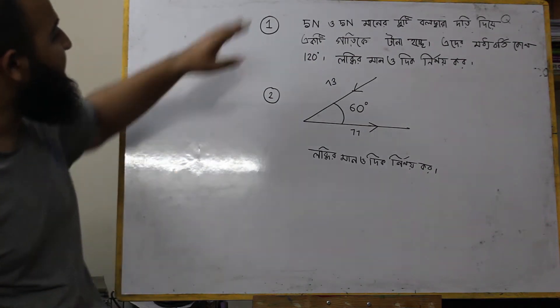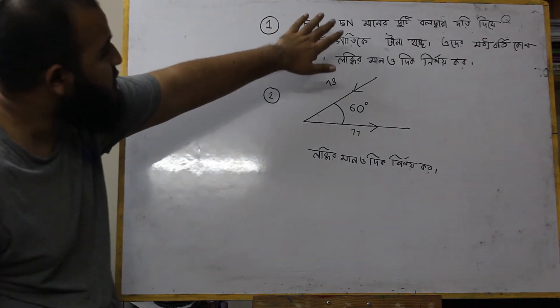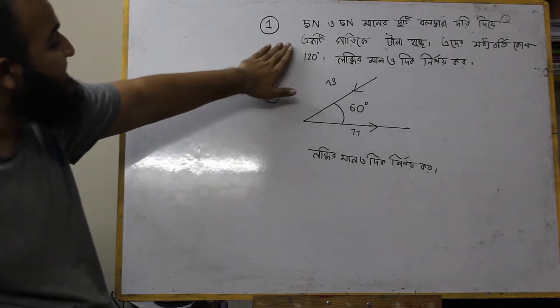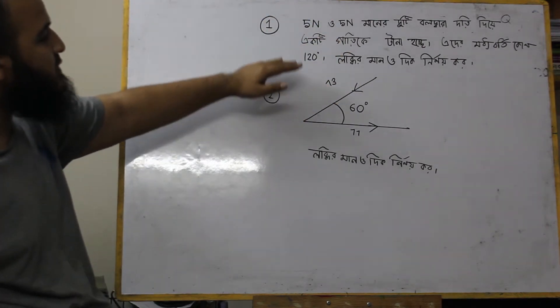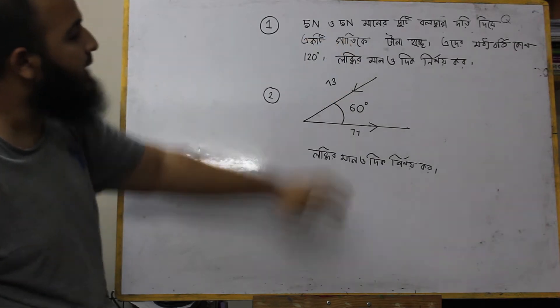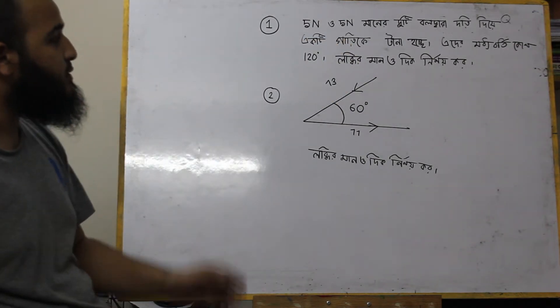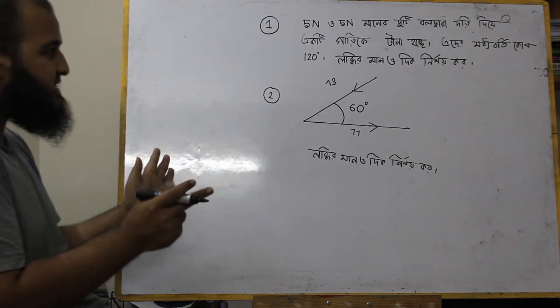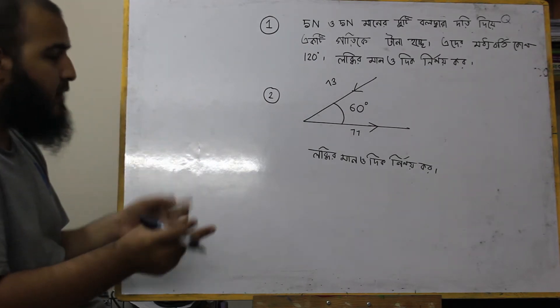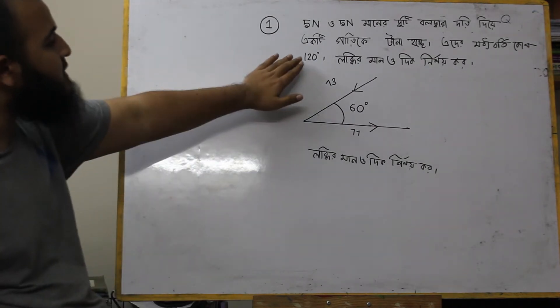The first question is that 5 newton and 5 newton forces are at an angle of 120 degrees. So if we have the force with 5 newton and 5 newton at 120 degrees.